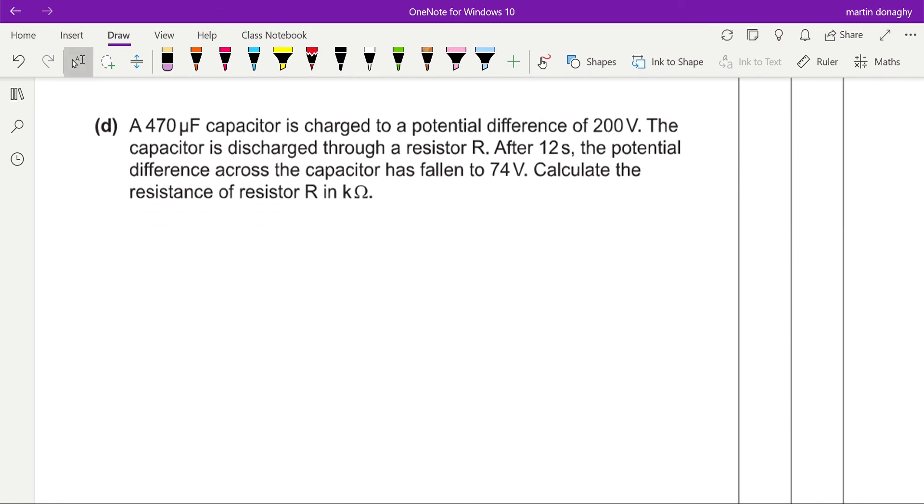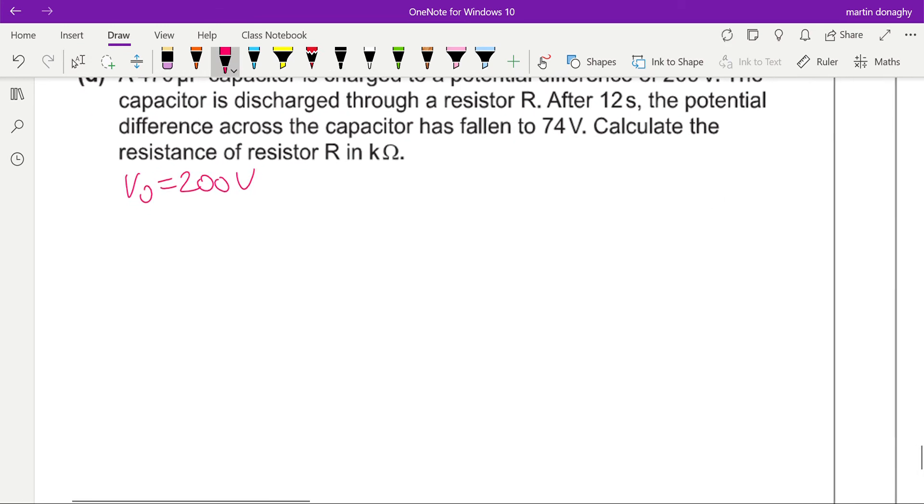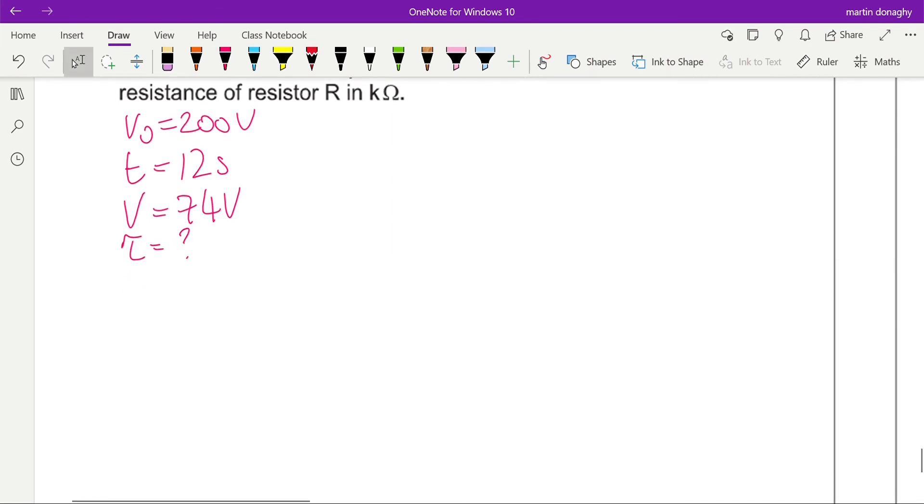Now there's two ways of doing this next bit. A 470 microfarad capacitor is charged to a potential difference of 200 volts. The capacitor is discharged through a resistor R. After 12 seconds, so V naught is equal to 200 volts, we'll do this both ways. And after a time of 12 seconds, the voltage has fallen to 74 volts. To find that resistance, we're first going to have to find out what our time constant is. So I can do V equals V naught e to the minus t over tau. Get your V's the right way round.